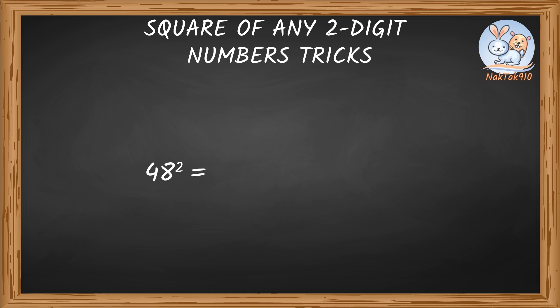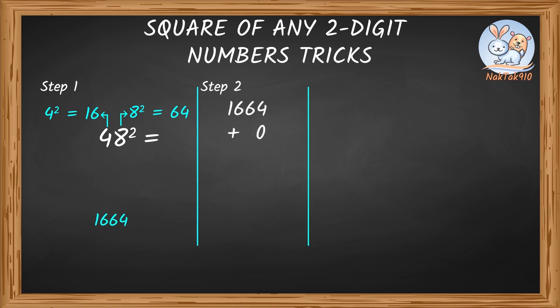48 square. 4 square is 16. 8 square is 64. Let's add a 0. 4 times 8 is 32. And 32 times 2 is 64. So it's 2,304. Friends, try this with me. This is fantastic.